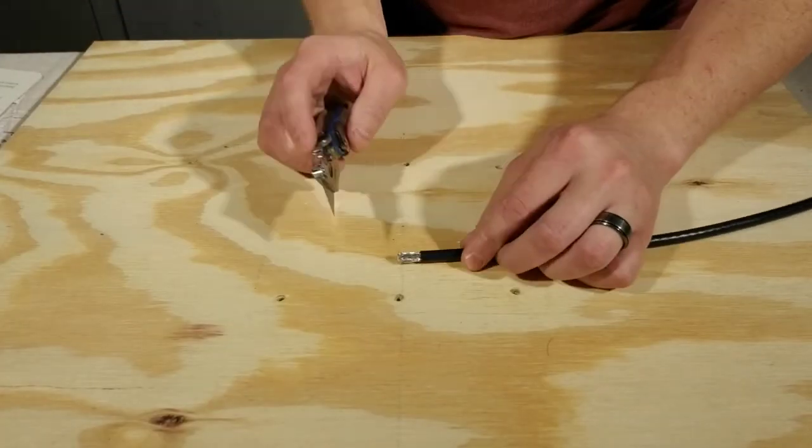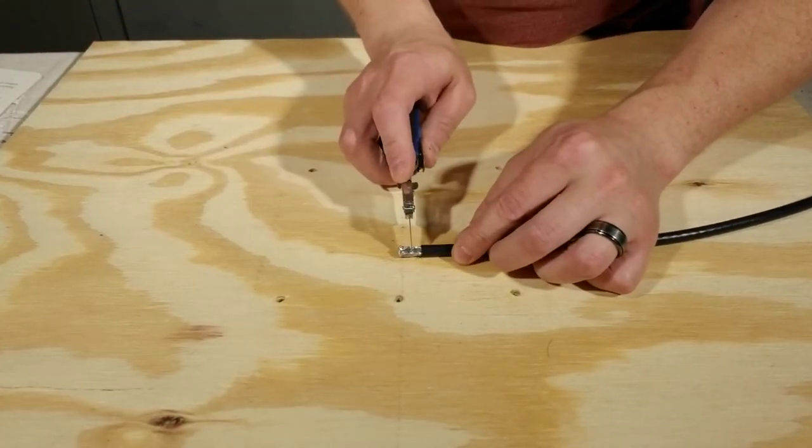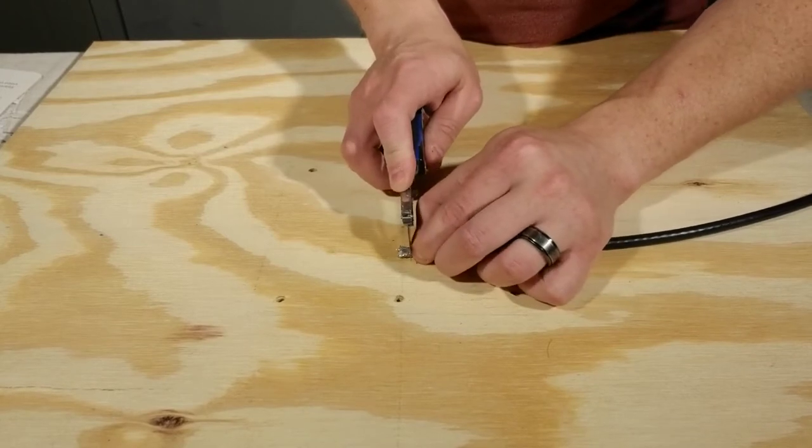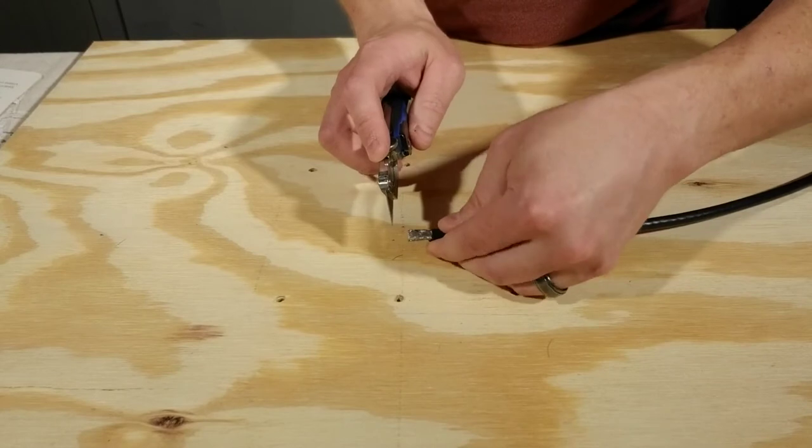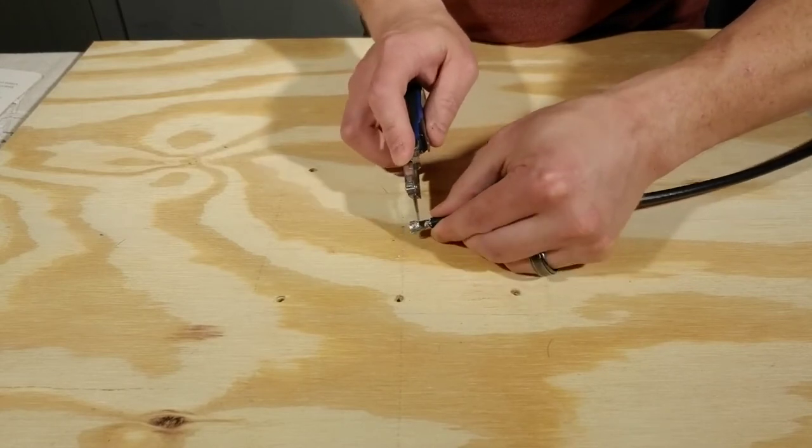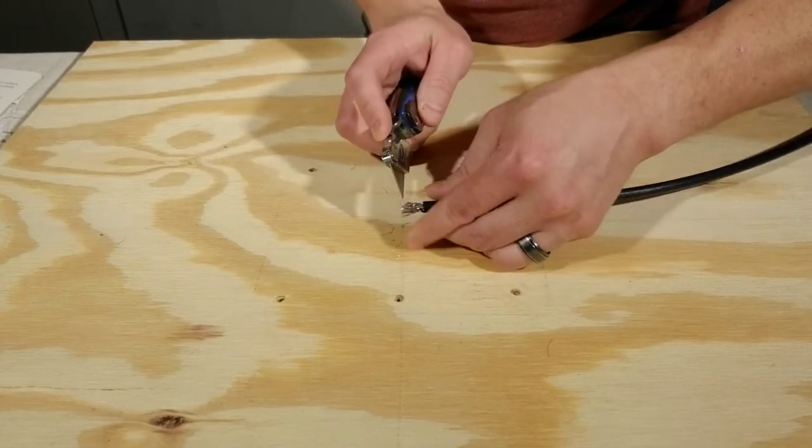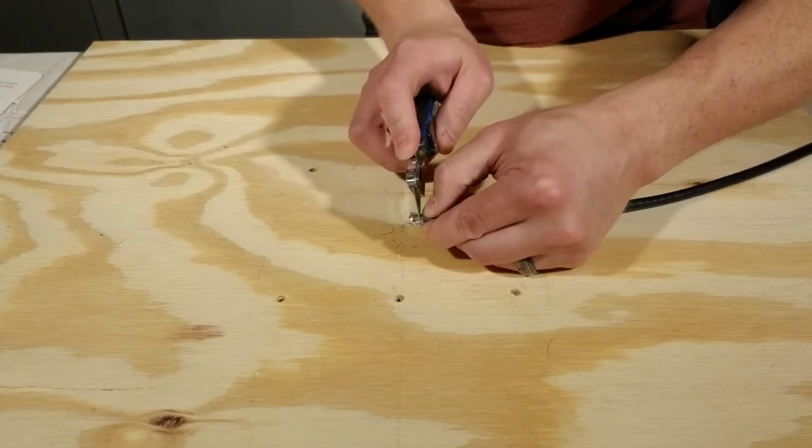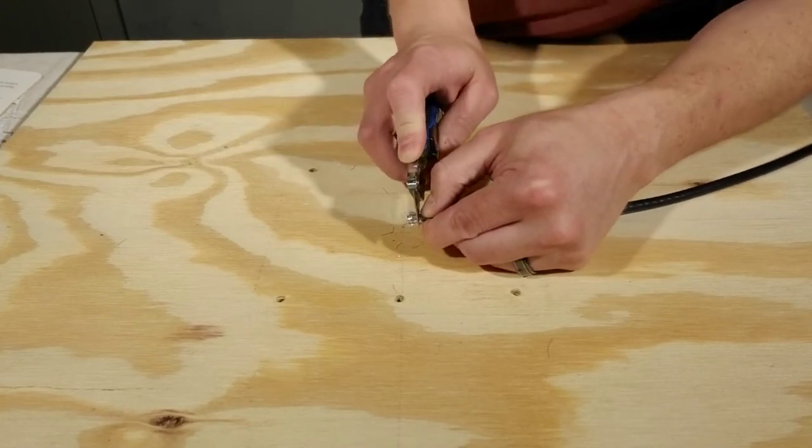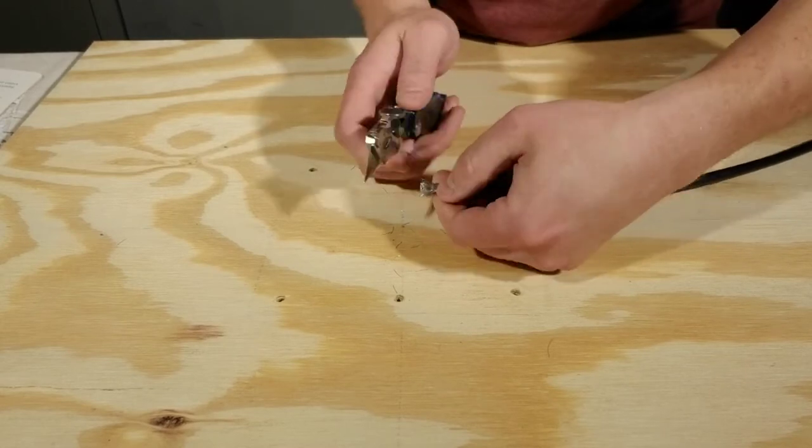Now that you have the inner layer exposed, you want to remove about a quarter of an inch of this inner layer that surrounds the center conductor. This inner layer that you're removing is usually made up of a layer of foil, the braids, and then the white foam. That's what surrounds the center conductor that's usually copper. Here I'm just using the razor blade and cutting straight through it.